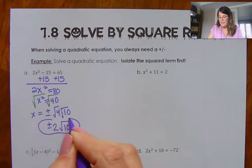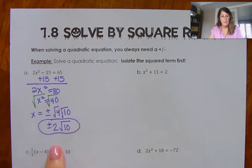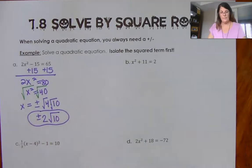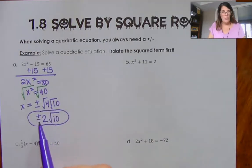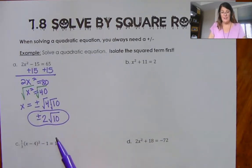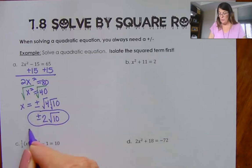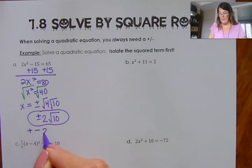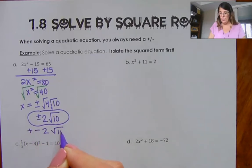If I was typing this into Buzz, I could type in plus or minus 2 radical 10. In Buzz, there's really no way to type in a plus or minus button, but you would just do plus minus 2 square root of 10.